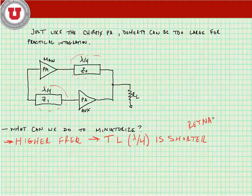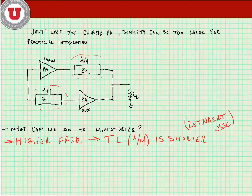If you look for papers by a guy named Patrick Rainier in JSSC, you'll see a couple of implementations of Doherty power amplifiers in the 60 gigahertz ballpark. Of course he's still not using quarter-wave transmission lines, he's using transformers. But nonetheless, this is one way that we can actually make the Doherty amplifier smaller.